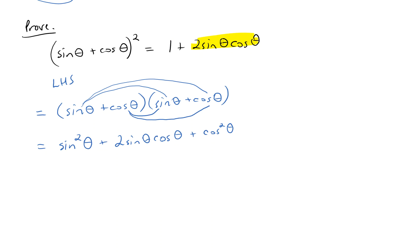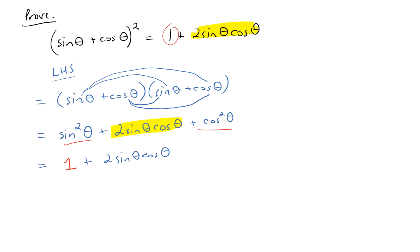We've got 2 sine theta cosine theta, and everything else needs to be 1. Sine squared theta plus cosine squared theta is, in fact, 1, so we apply that identity and bring down the 2 sine theta cosine theta. We've proven that the left-hand side equals 1 plus 2 sine theta cosine theta, which is the right-hand side. That's the end of the proof.